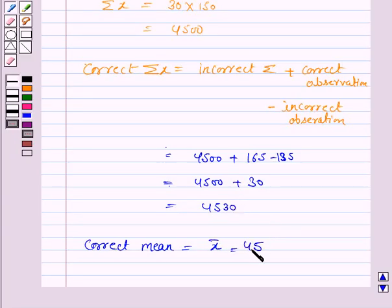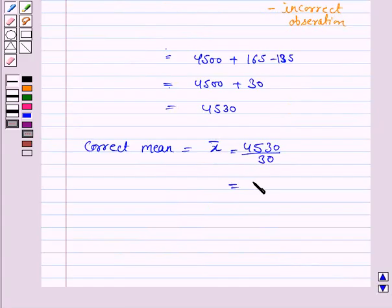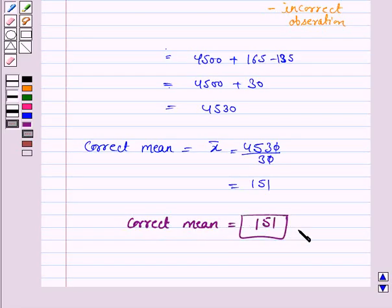So now the correct mean equals X bar. The sum of observations is 4530 divided by 30, which equals 151. So the correct mean is 151.